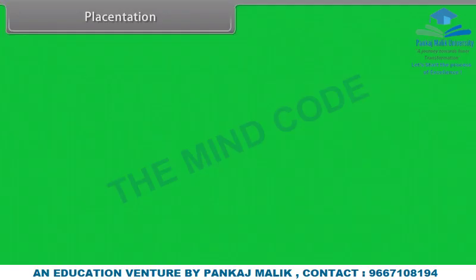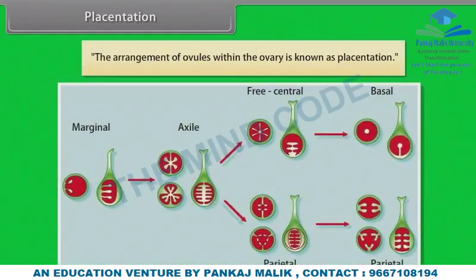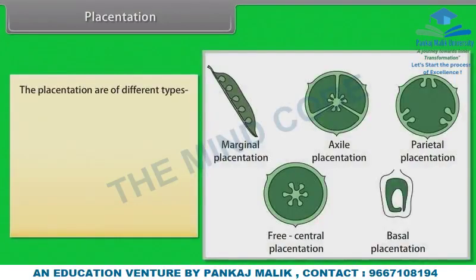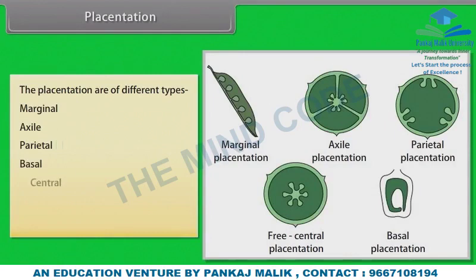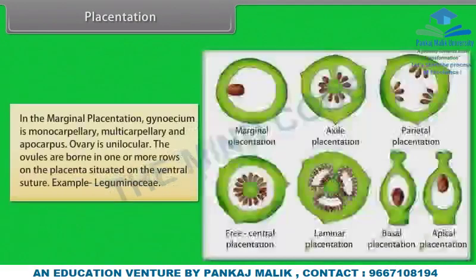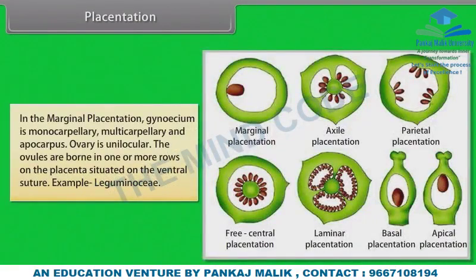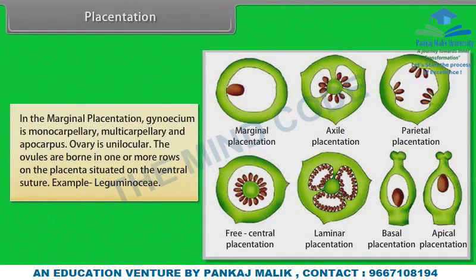The arrangement of ovules within the ovary is known as placentation. The types are: Marginal — gynosium is monocarpellary and apocarpous, ovary is unilocular, ovules are born in one or more rows on the placenta situated on the ventral suture, example Leguminosae. Axile — gynosium is bicarpellary to multicarpellary and syncarpous, ovary is multilocular; the margins of individual carpels project inwards and fuse so ventral sutures are placed along the axis, with as many chambers as carpels, example Malvaceae.